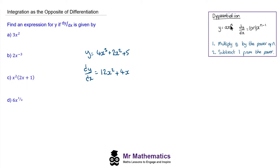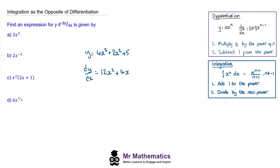So we're going to look at integration, which is the opposite of differentiation. Rather than multiplying by the power of n and then taking away 1 from the power, we reverse the order: we add 1 to the power and then divide by the new power. So in this formula, if we have xⁿ and we integrate it with respect to x, we add 1 to the power and divide by the new power.